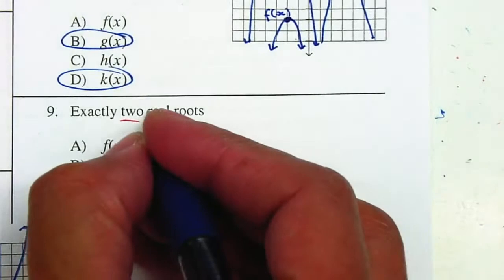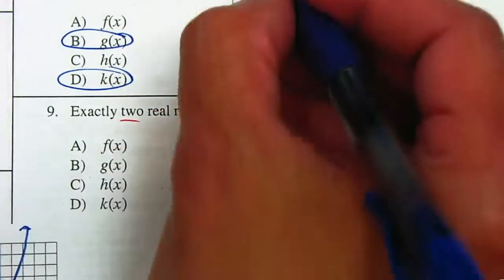And we need to have exactly 2 real roots. So that'll be h of x.